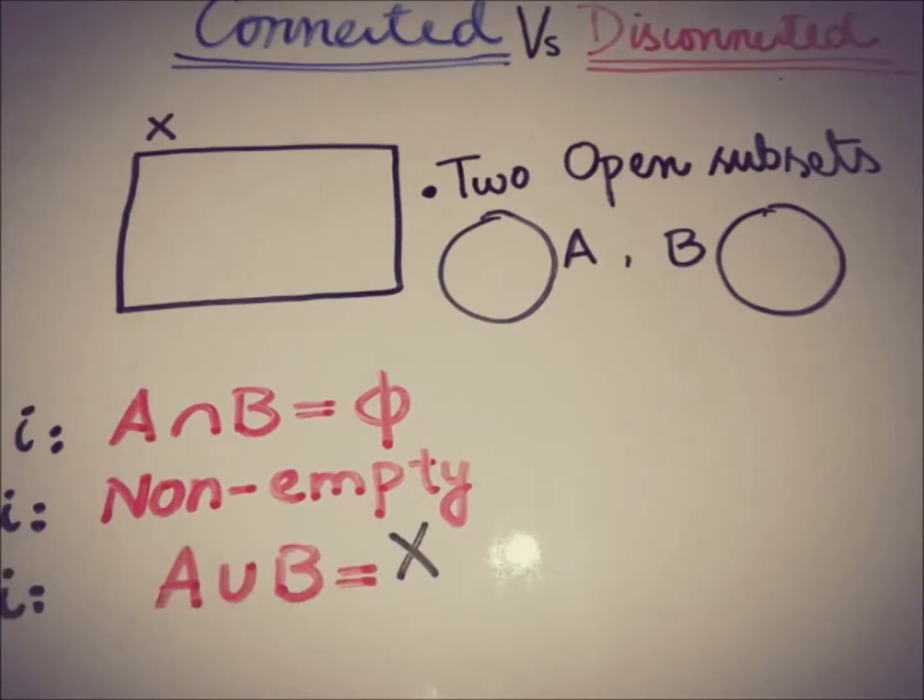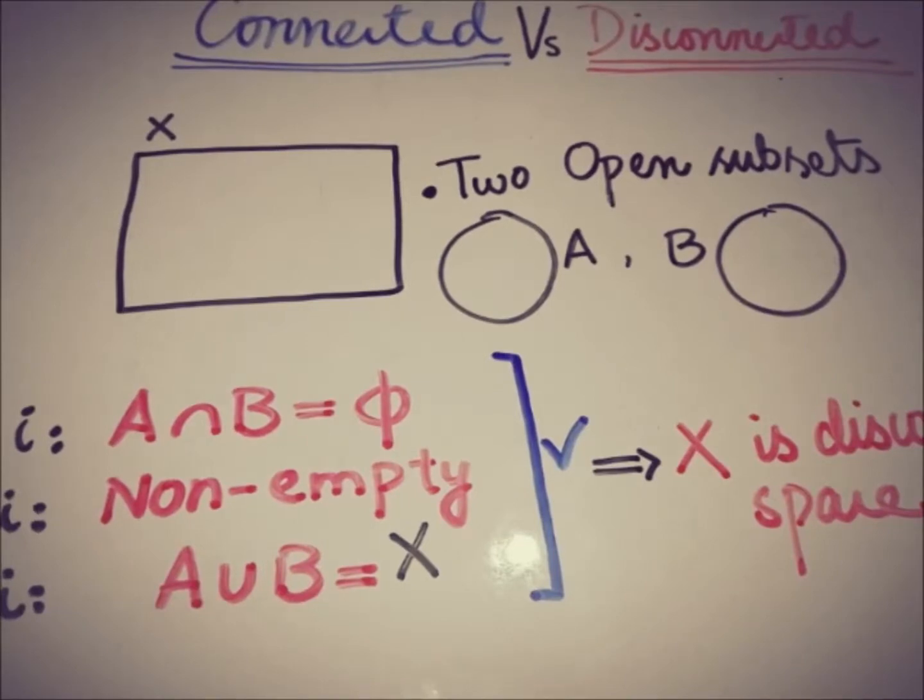The third property is the union of open subset A and B must be equal to that set or space X. If such a pair of disjoint open subsets of the space X exists whose union is equal to X, then we will say that the space X is a disconnected space.